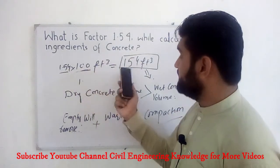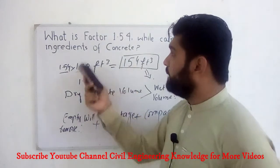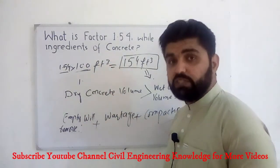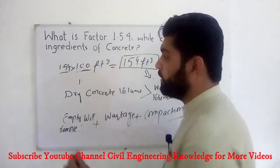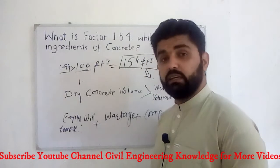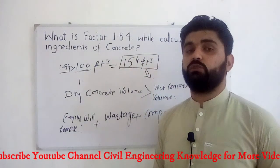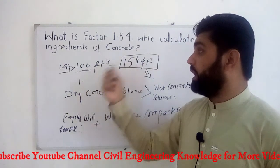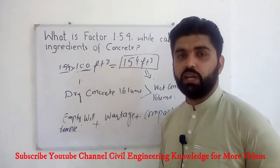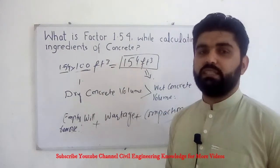By accumulating these three factors, engineers derived the factor called 1.54. So while calculating the quantity of ingredients of concrete, we multiply the factor 1.54 by the specific given volume for which we are calculating. I hope this topic is now clear. If you have any questions, you can ask in the comment section. Keep watching the video, and if you like it, please subscribe to the channel.